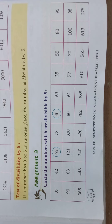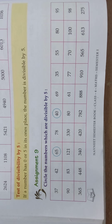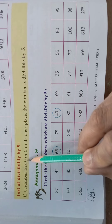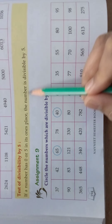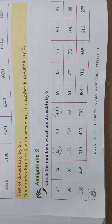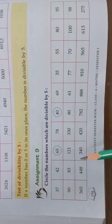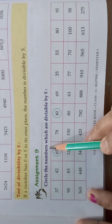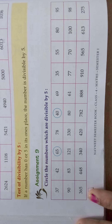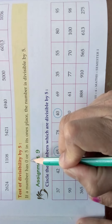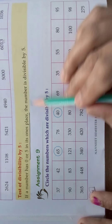Test of divisibility by 5 — we are going to check whether the given number is divisible by 5 or not. The condition is: if a number has 0 or 5 in its ones place, the number is divisible by 5. This you don't need to do in your classwork — by observing the number itself we can tell whether the number is divisible by 5 or not.